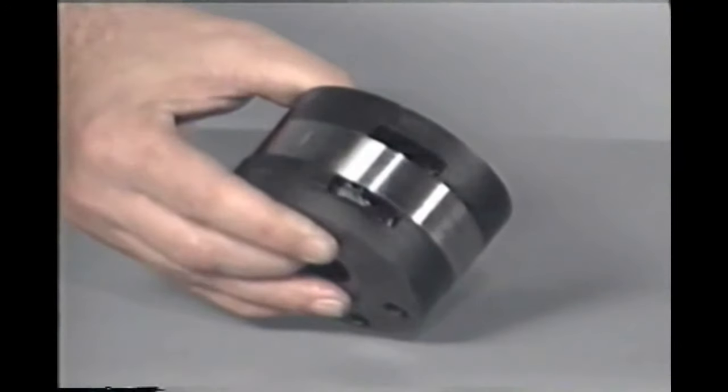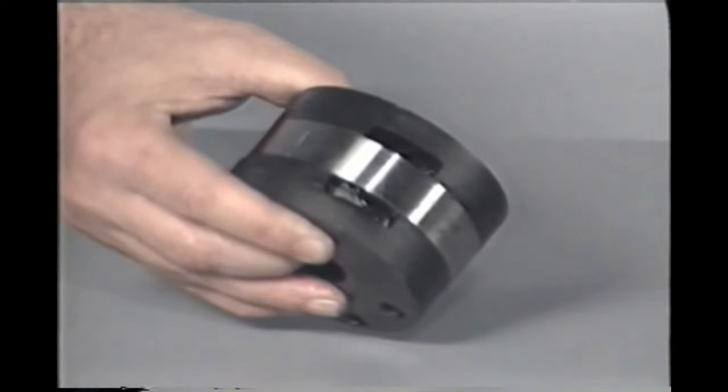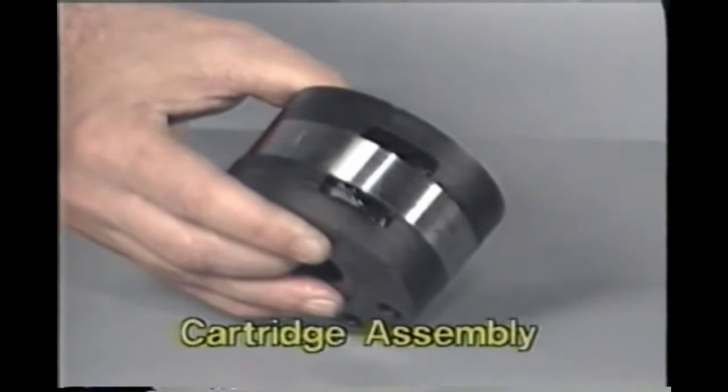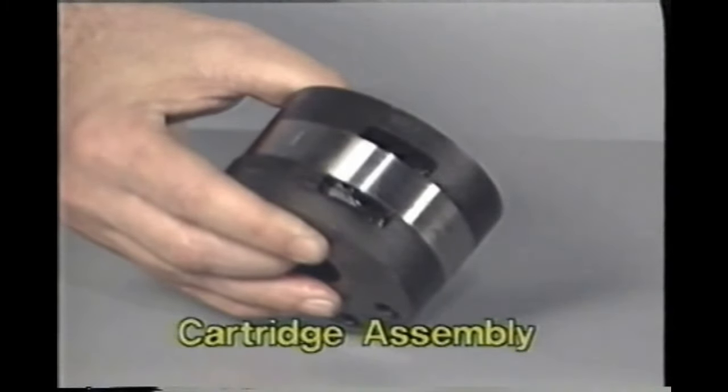The size of a motor means its displacement, or how much fluid it can hold. In a vane type motor, changing the displacement can only be done by changing the cartridge assembly, which is the rotating group and the cam ring sandwiched between the port plates.